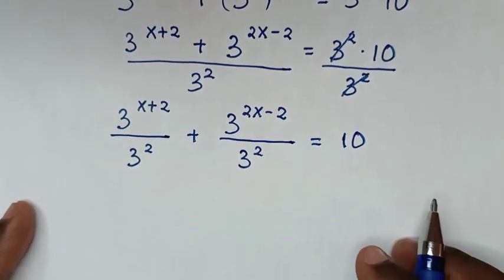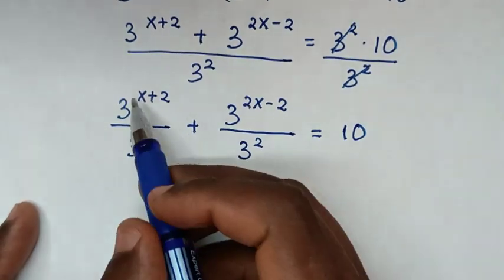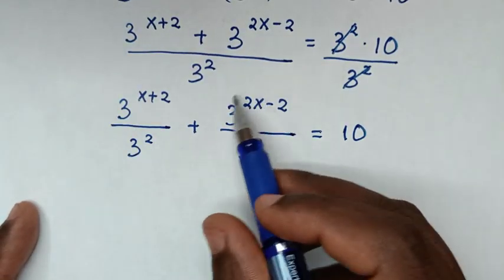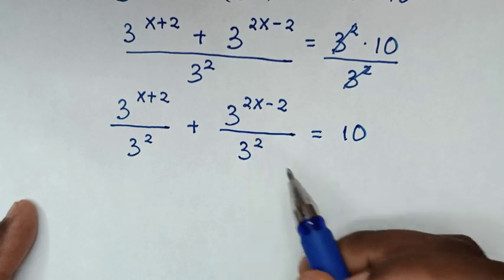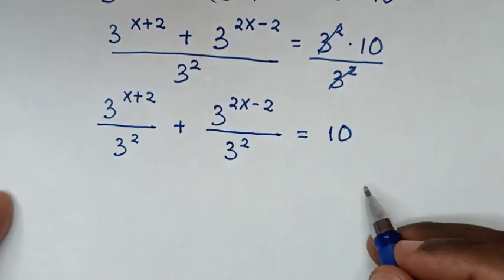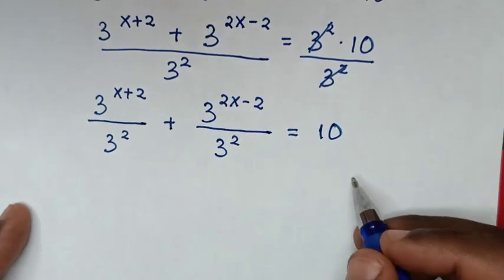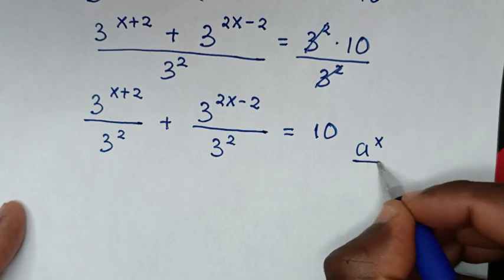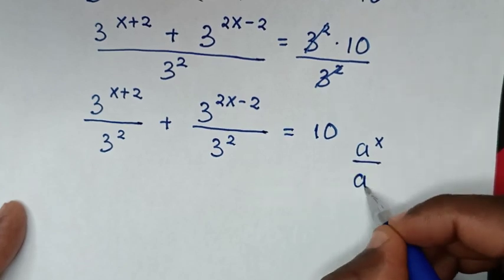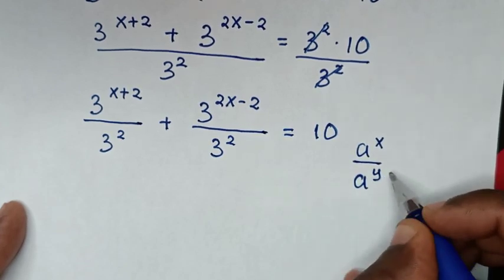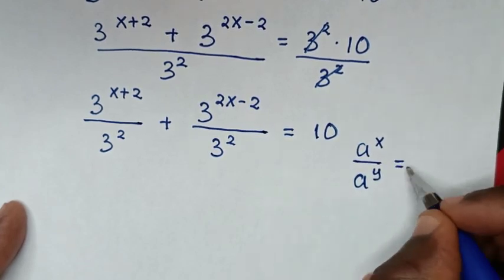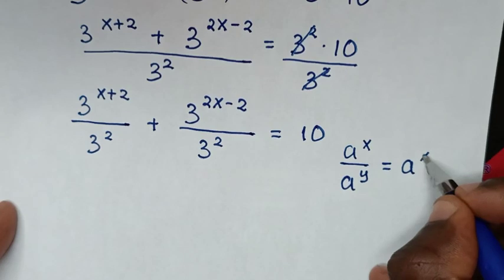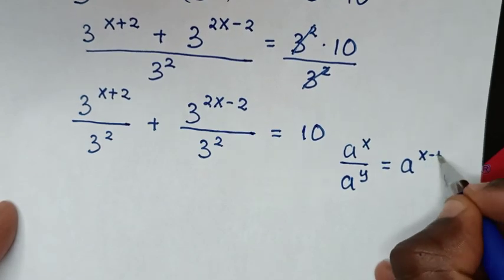Then in the next step, from this division of exponents, we will apply the exponential rule that a power of x over a power of y is equal to a power of x minus y.